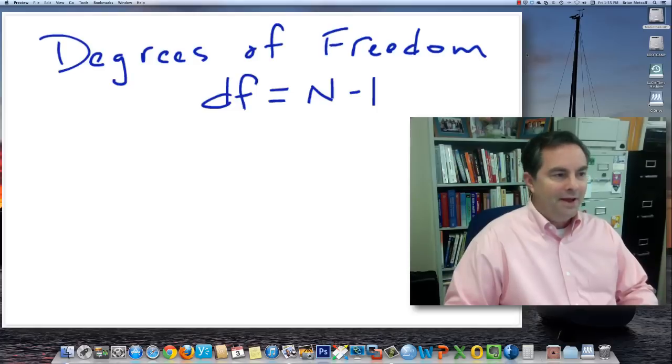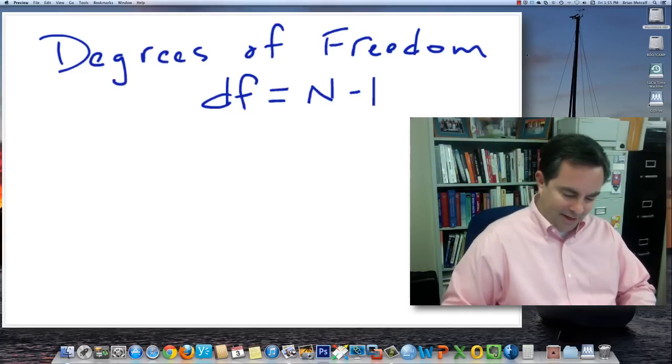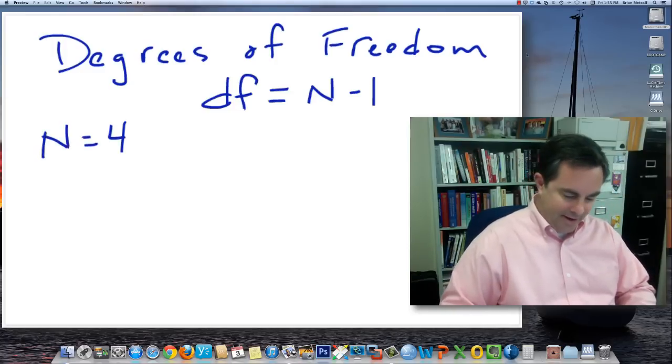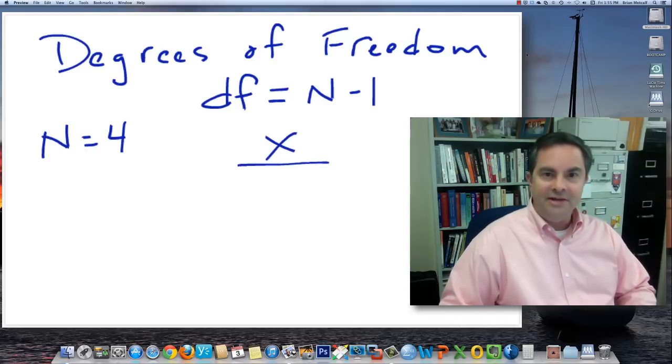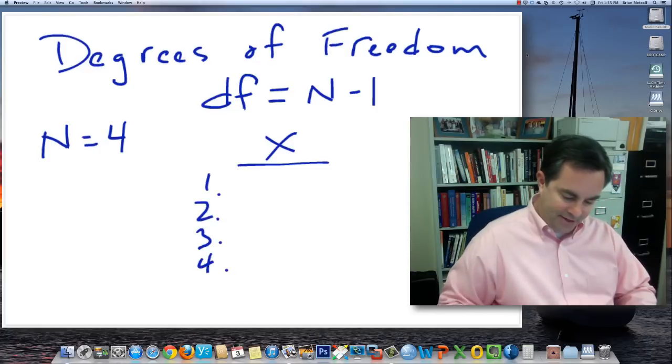So every group of data is missing a degree of freedom. What in the world does that mean? Let me try to explain it a little bit with this silly example here. So let's say that we're going to have a data set of 4. We have 4 numbers. And let's call it x, this little data set. And I'm going to reveal them to you one at a time here, okay? The 4 numbers, one at a time.